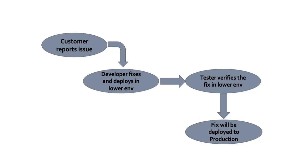It could be a System Integration Testing environment or User Acceptance Testing environment — it could be SIT or UAT. Once it is fixed, it comes to the testers. The tester has to verify the particular piece that got fixed, as that part requires major attention. Once after confirmation from the tester, that fix will go into production immediately — there is no wait. This is the process where the hot fix comes into picture.